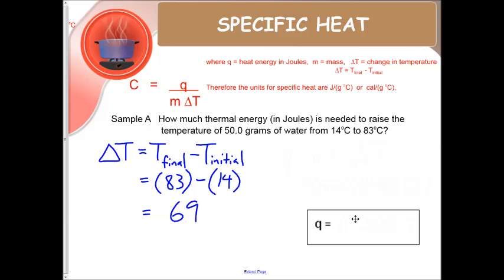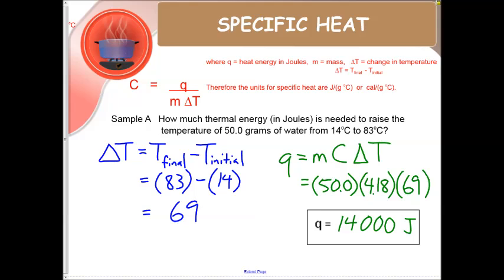Now we are going to plug it into the Q equals M C delta T. That is going to be the formula we use to solve for energy. Q is energy. So we are going to plug in 50.0 for M, 4.18 for C. We got C from the chart of specific heats we provide. And 69 is what we got for delta T. So when we do the math here we get 14,000 joules. And we rounded that for sig figs.